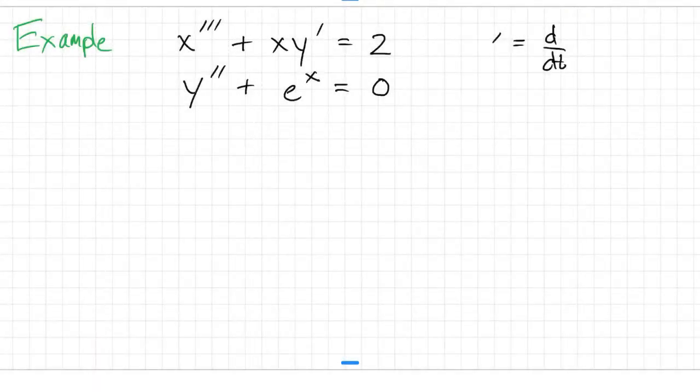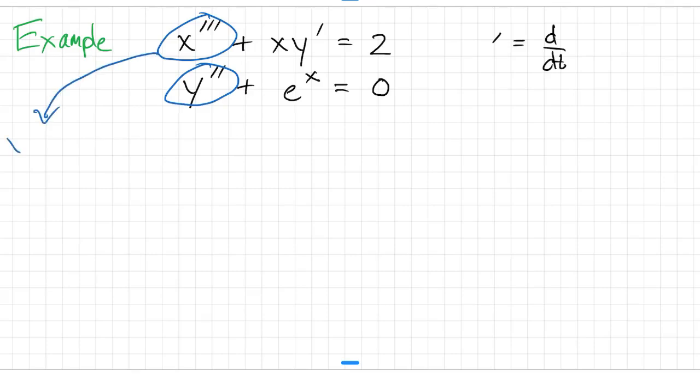The reduction from order to dimension works for any equations. So here I have a third and a second order equation. The first step is to identify the highest derivative in each of the variables. The x triple prime tells me that I need to include x, x prime, and x double prime. And the y double prime tells me I need y and y prime. Everything up to but not including the highest derivative in each variable. So my vector of unknowns will be x, x prime, x double prime, y, and y prime. I have five components.